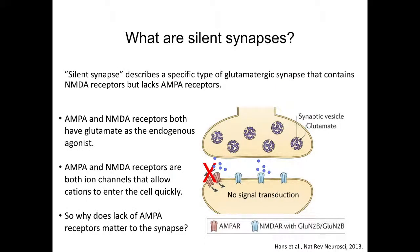A silent synapse can describe any synapse that does not produce neurotransmission. However, silent synapses have come to describe a specific type of glutamatergic synapse that contains postsynaptic NMDA receptors but lacks AMPA receptors.